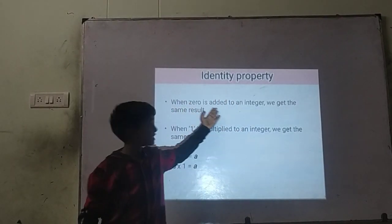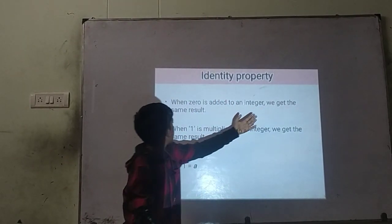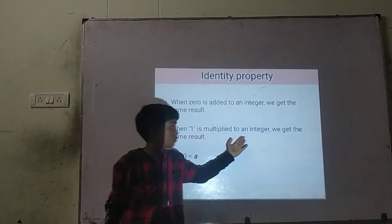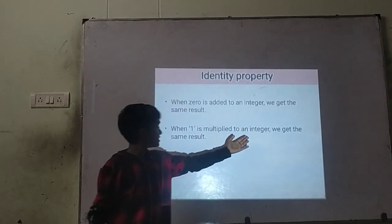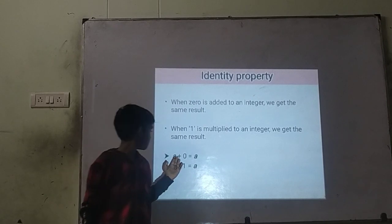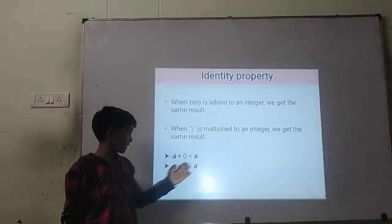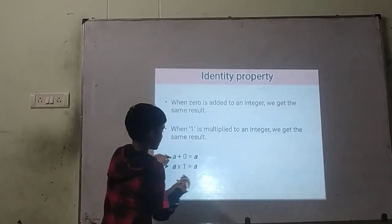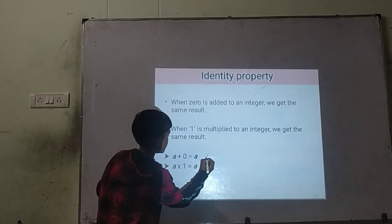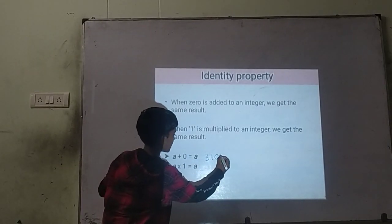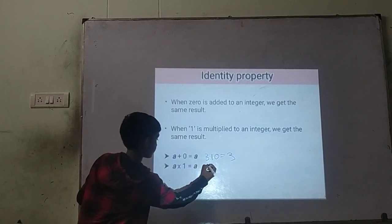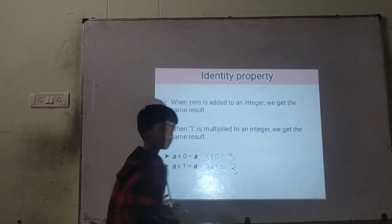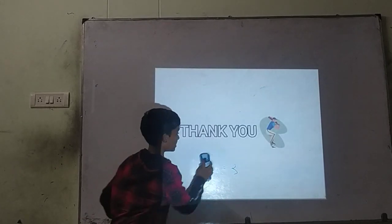Identity property. When 0 is added to any integer, you get the same result. When 1 is multiplied by any integer, you get the same result. For example, 3 plus 0 is equal to 3, and 3 into 1 is equal to 3. Thank you.